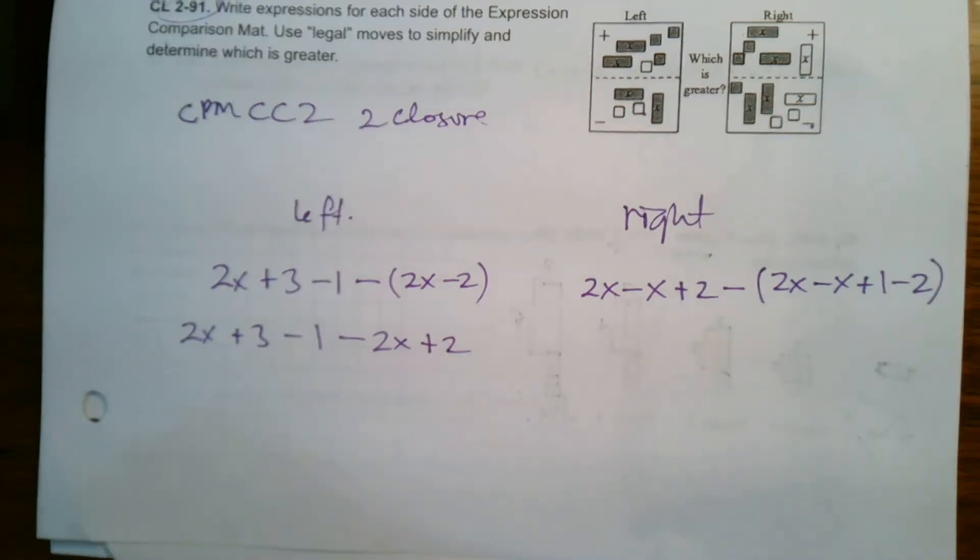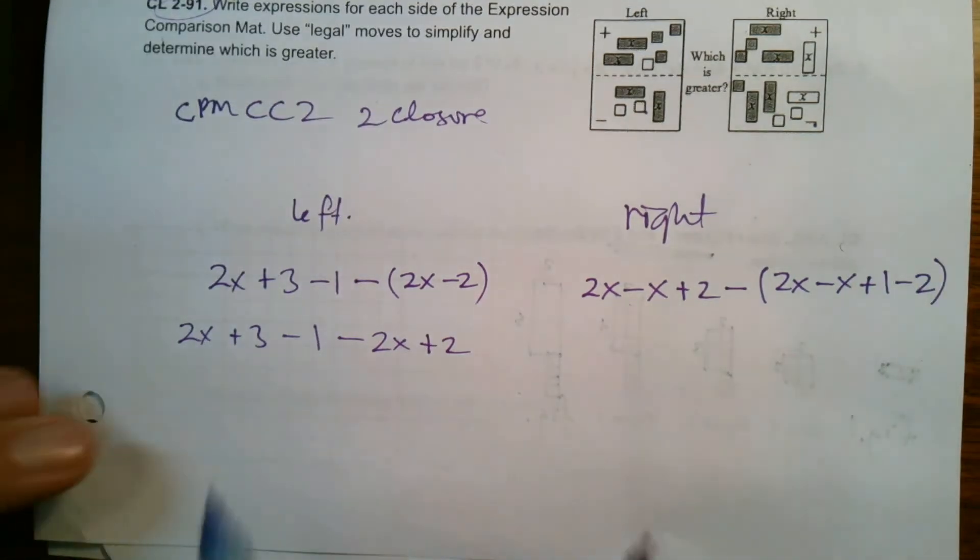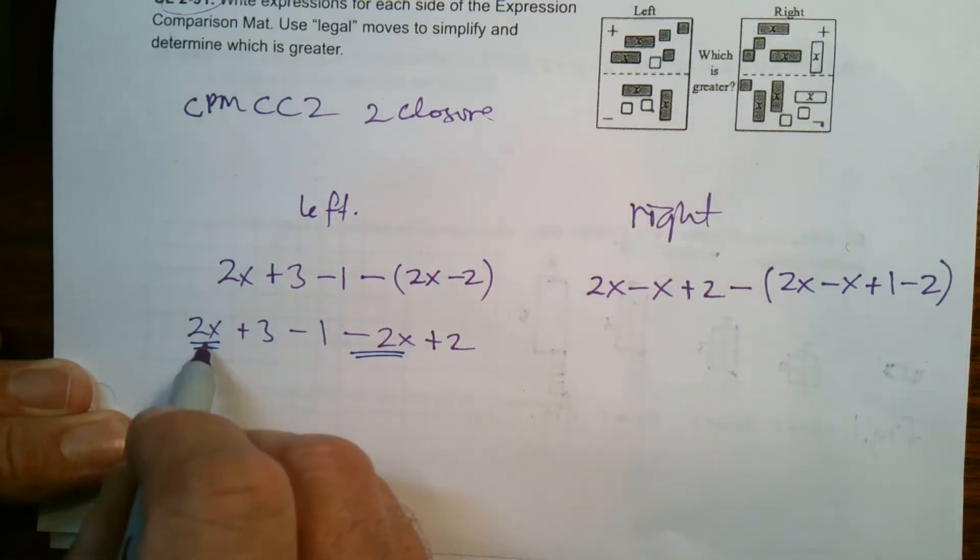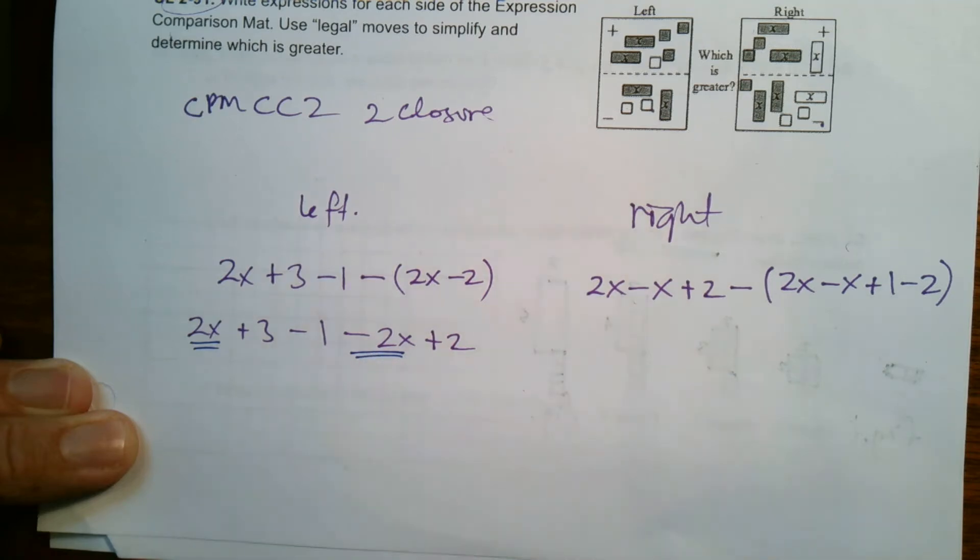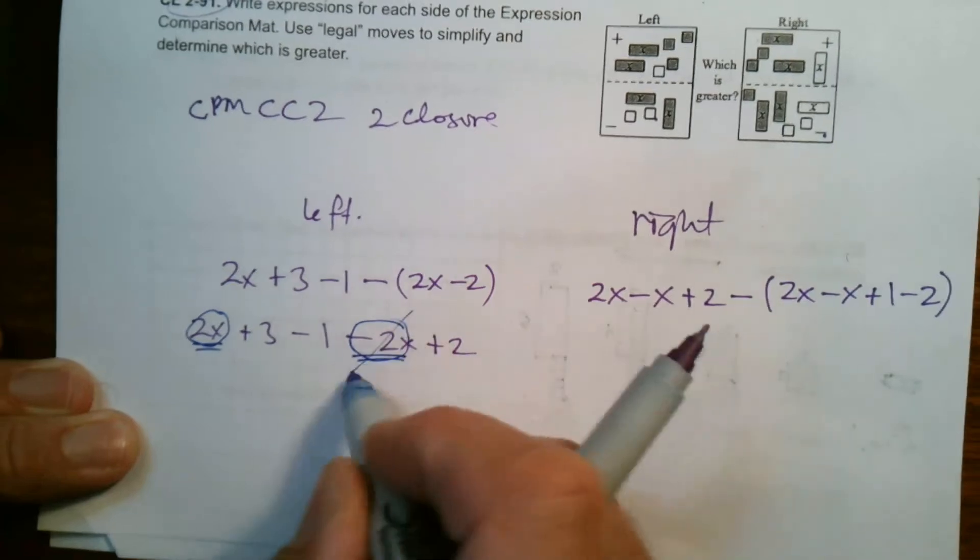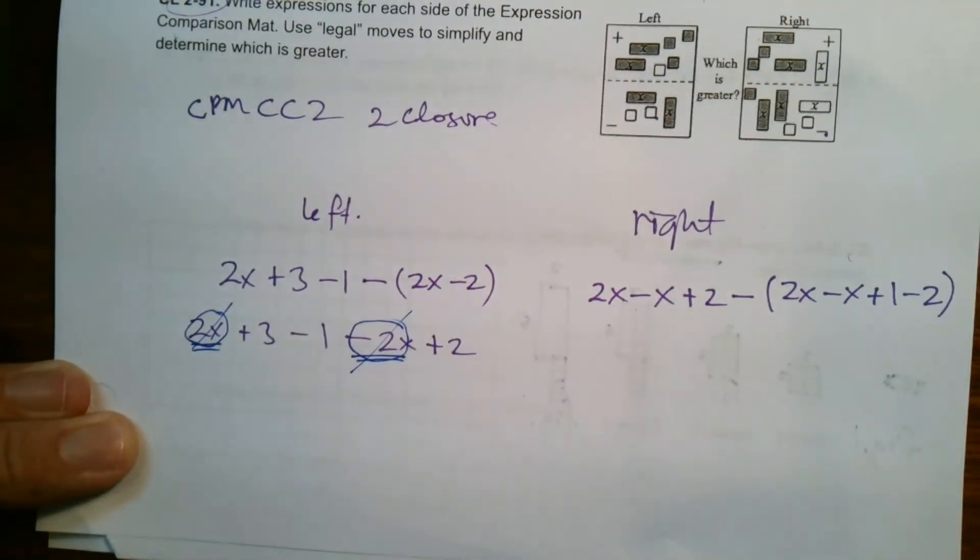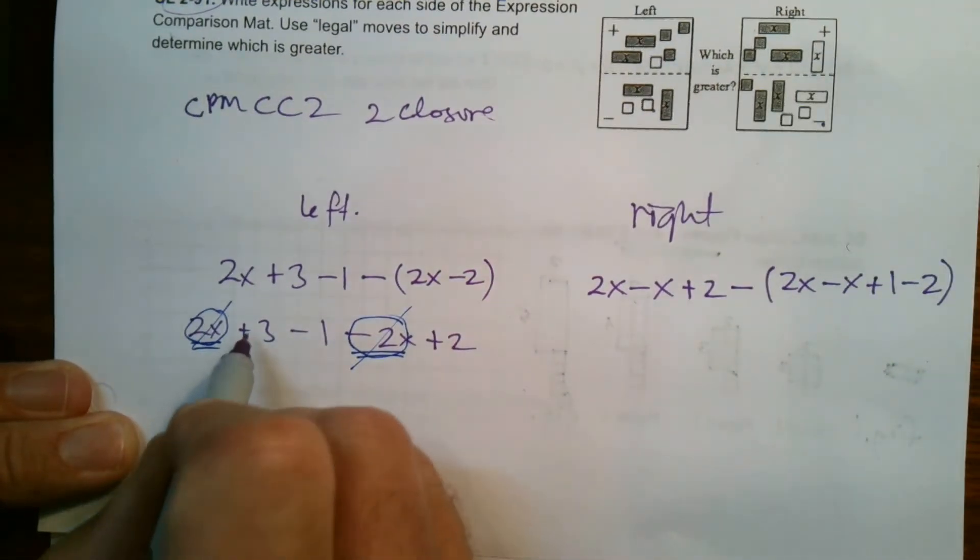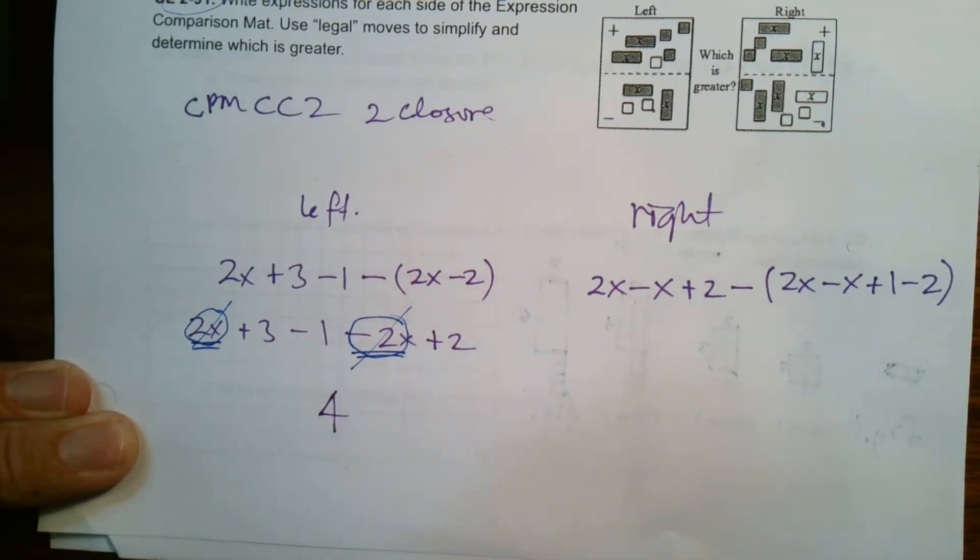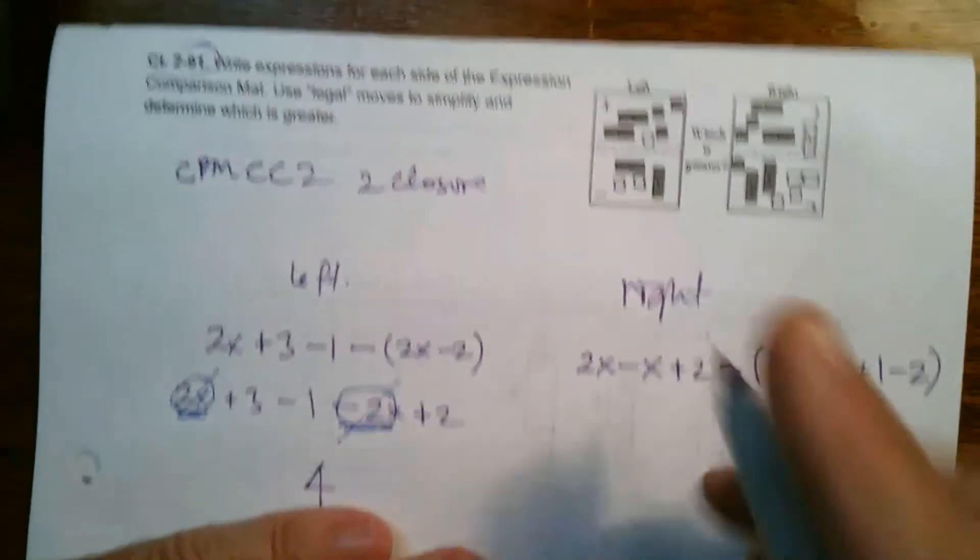And now it's just a matter of combining like terms. So my like terms, I've got, here I have 2x and I have negative 2x, or minus 2x. So 2x minus 2x, I'll just circle those so we see that 2x and a minus 2x, those go away because they cancel each other out, zero x. So now it's just looking at the numbers. Three minus one is two, plus two is four. So the left side is four.